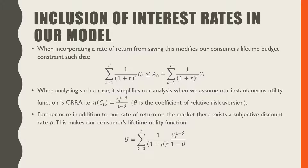When analyzing such a case, it simplifies our analysis to assume that our instantaneous utility function is constant relative risk aversion (CRRA) — a utility function we've seen in our Ramsey-Cass-Koopmans model. Theta in this context is our coefficient of relative risk aversion.